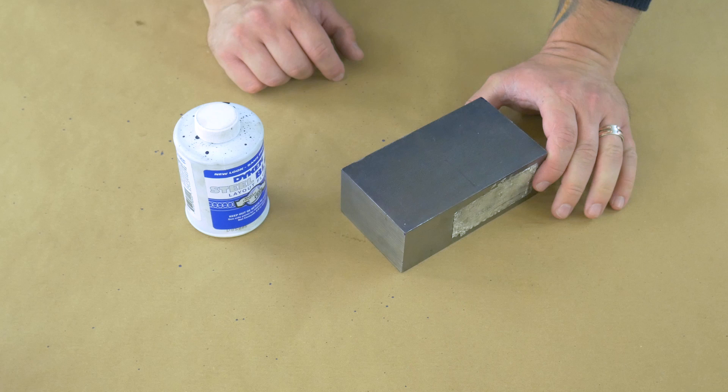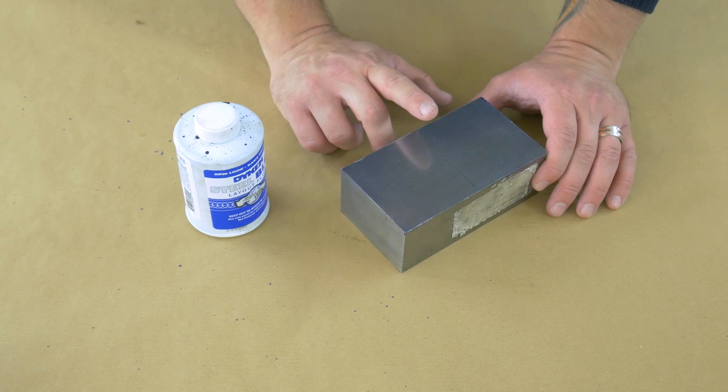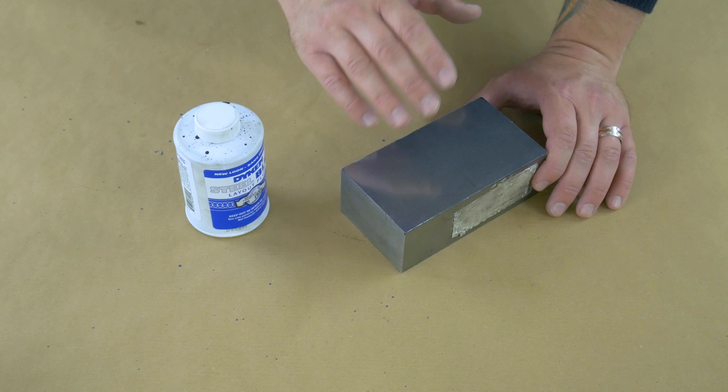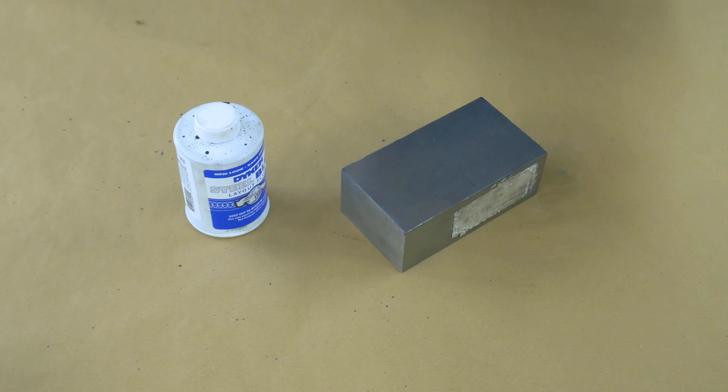And it's used for putting a layer on chunks of metal like this. This is quite a big block of bright steel. But it's used for putting a layer on here that you can mark out layout lines, center holes, that kind of thing, or even making notes on here. You can note down dimensions and stuff like that.